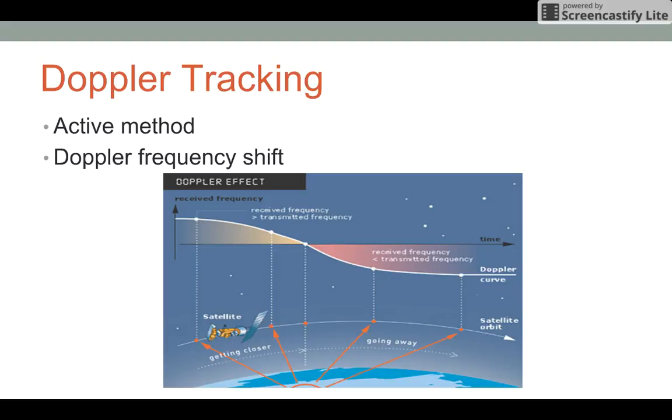As the satellite is moving away from the ground station, the received frequency is less than that of the transmitted frequency as the satellite is going rapidly away.